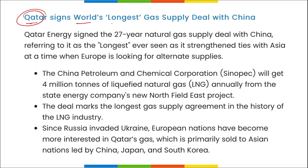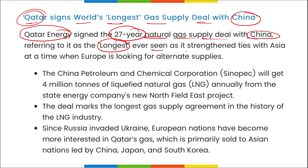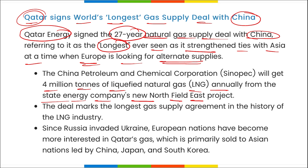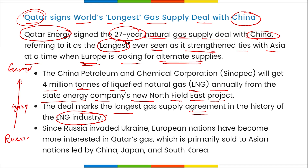Qatar has signed the world's longest gas supply deal with China. Qatar Energy signed a 27-year natural gas supply deal with China, making it the longest ever in the LNG industry. This strengthens Qatar's ties with Asia at a time when Europe is looking for alternative gas supplies. China Petroleum and Chemical Corporation will receive 4 million tons of liquefied natural gas annually from Qatar's North Field East project.